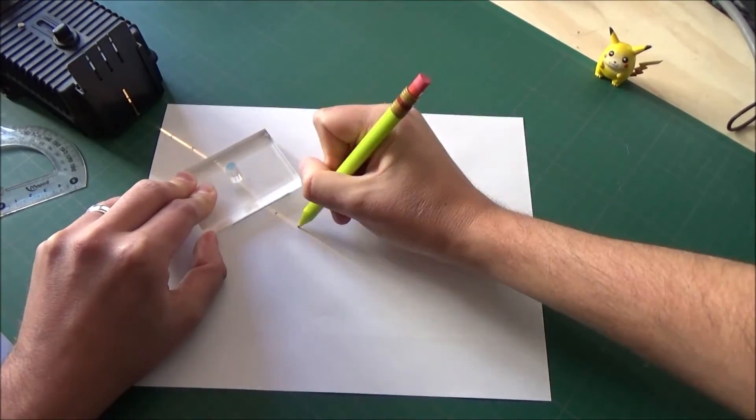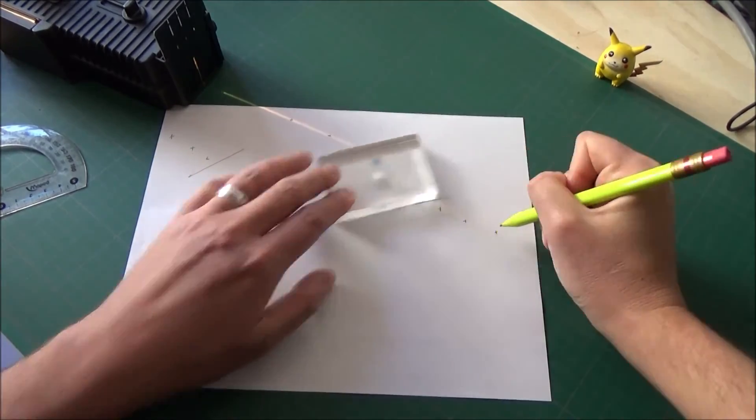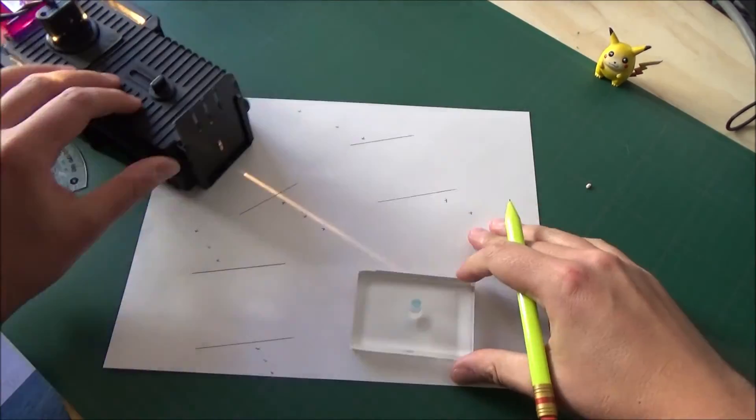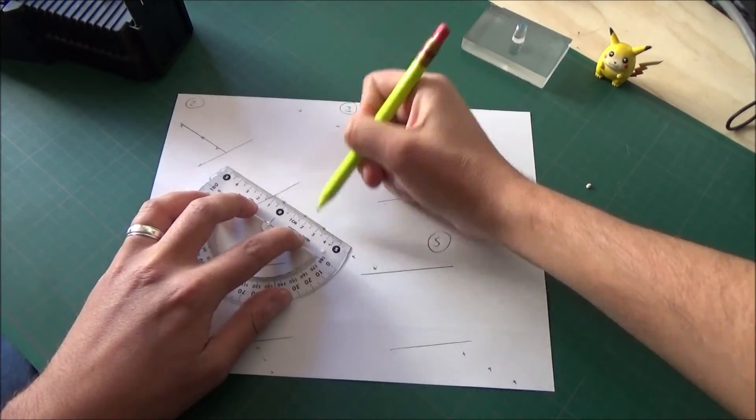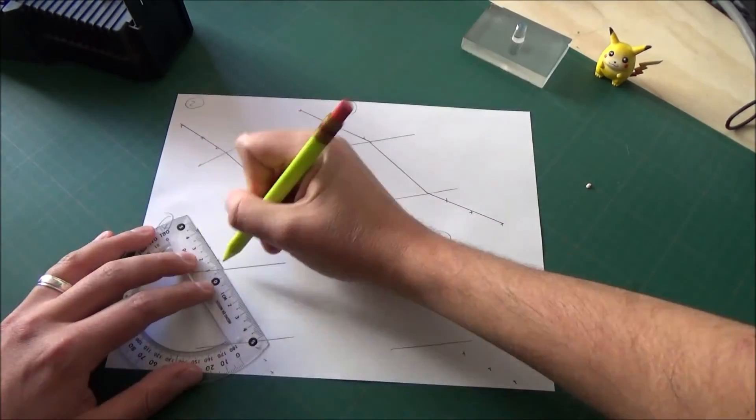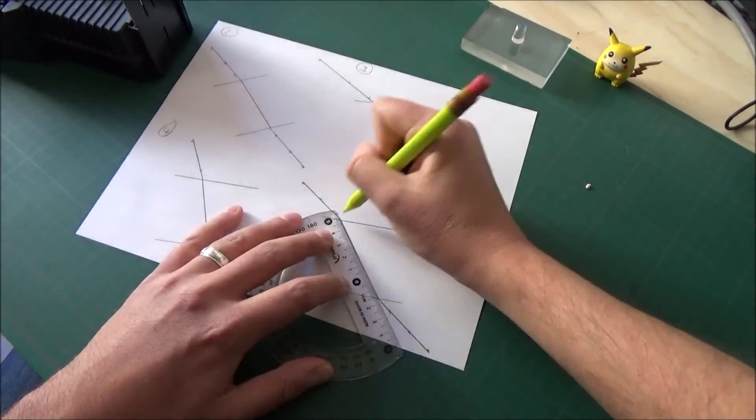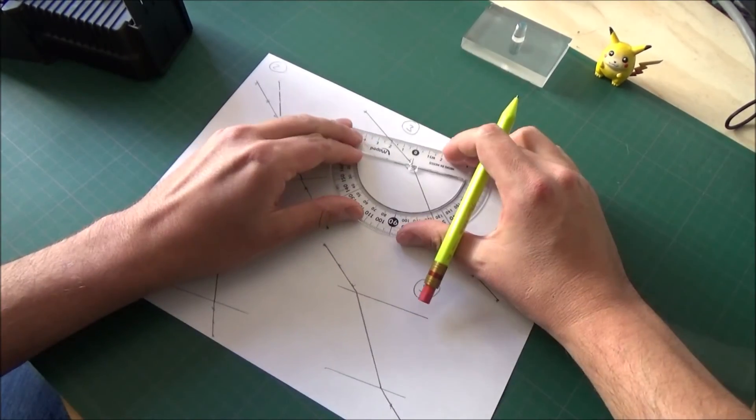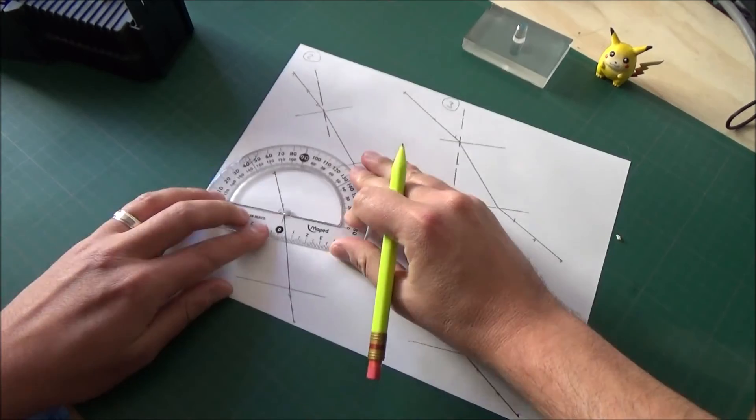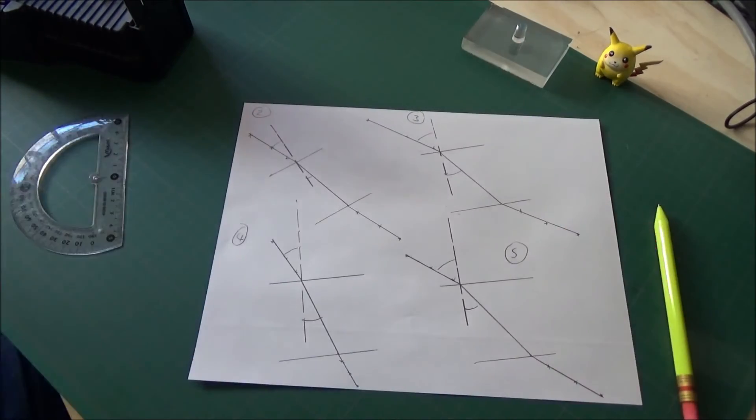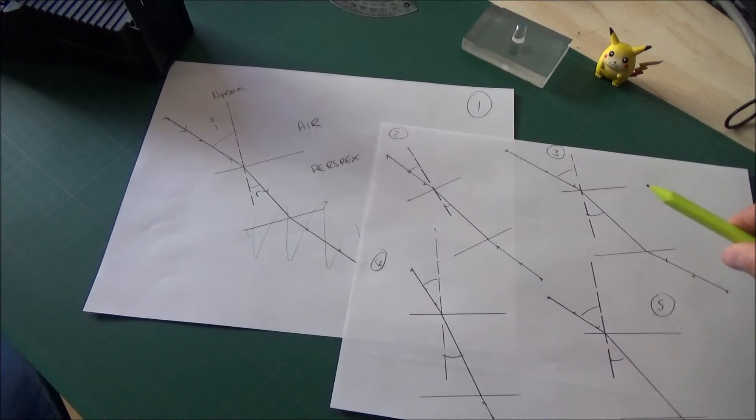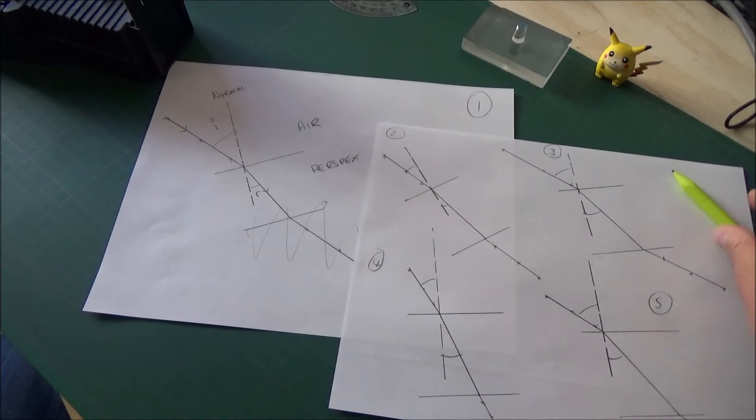For both of these methods, I need to take as many readings as I possibly can. So, in this case, I'm going to vary the angle of incidence and repeat the experiment four more times for four more different angles of incidence. I will trace the ray just like before. I will draw my normal just like before. And what I'm going to do now is measure those angles of incidence, measure those angles of refraction, and put them into a table of results. So, I'll have five different readings.